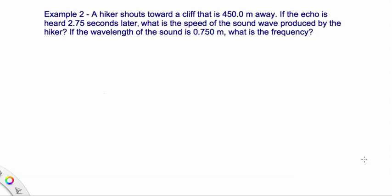So let's write down what we know. We know to find our velocity, we're going to have to do distance over time. But before I write anything down, let's think about we're doing an echo. So it has to travel this 450 meters to the cliff and 450 meters back.